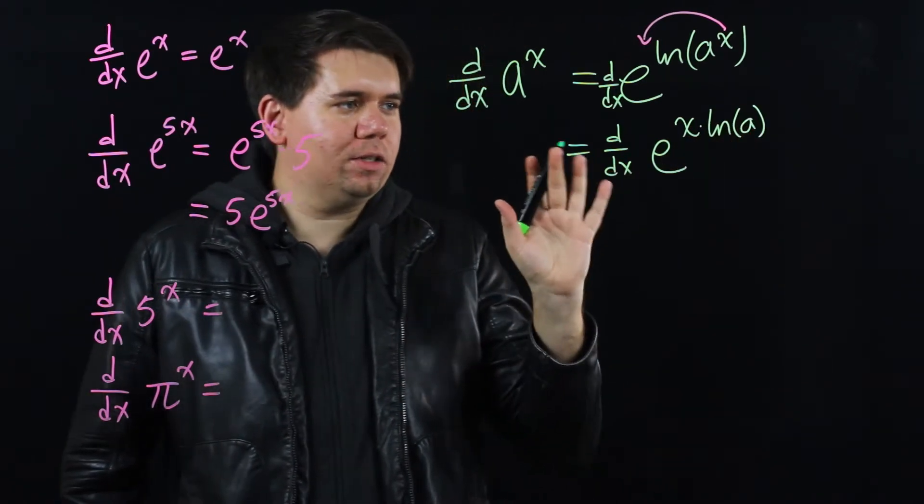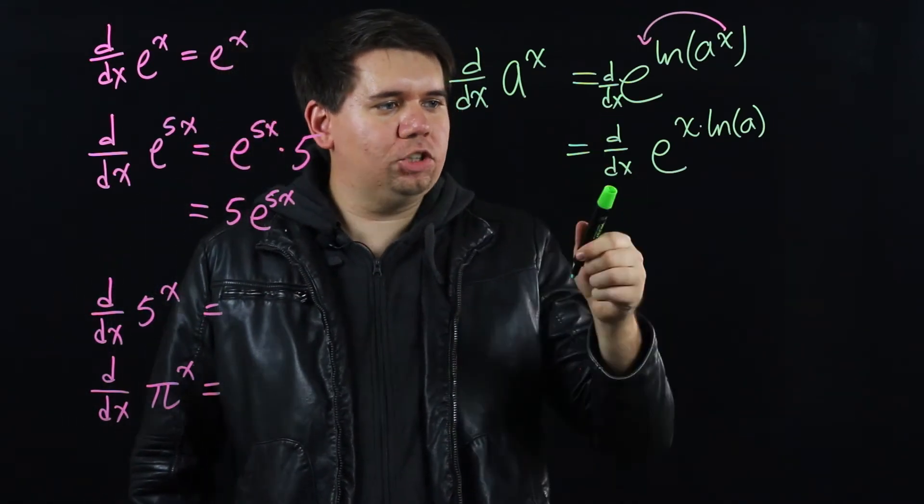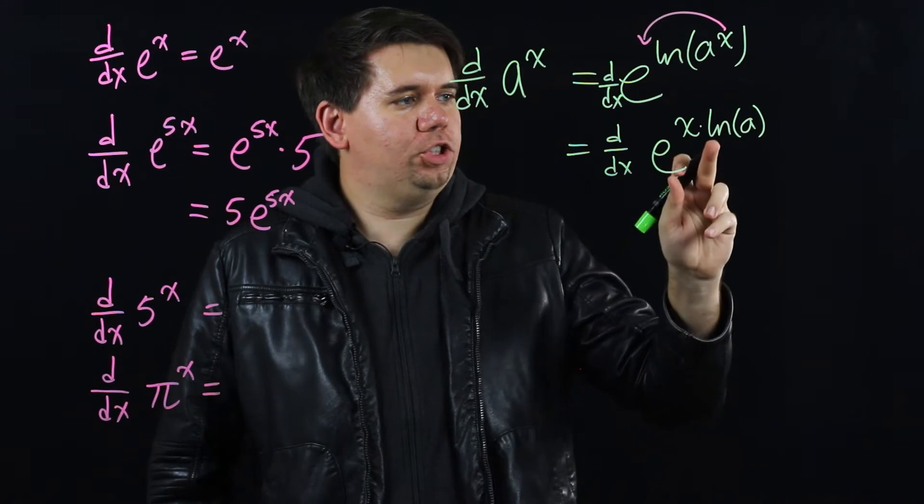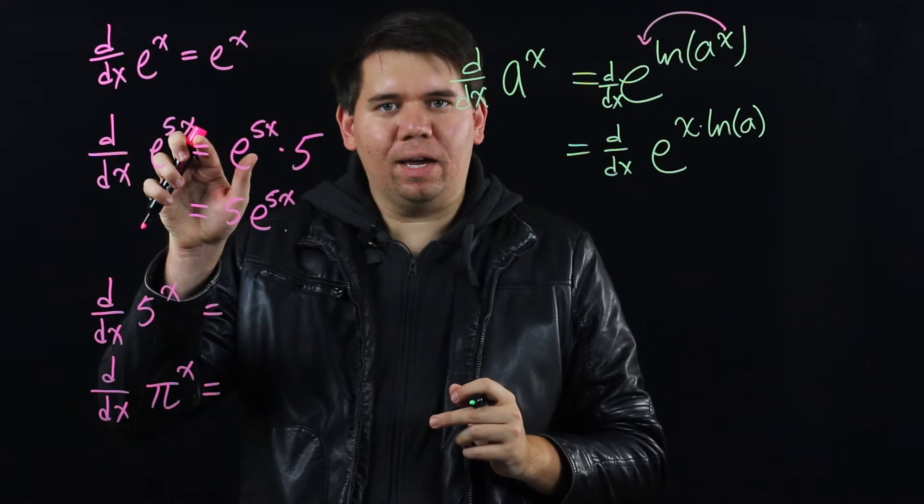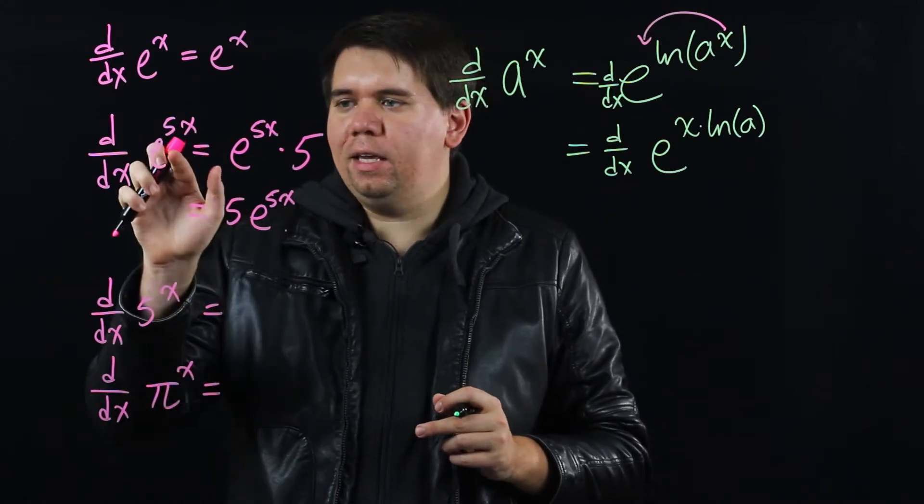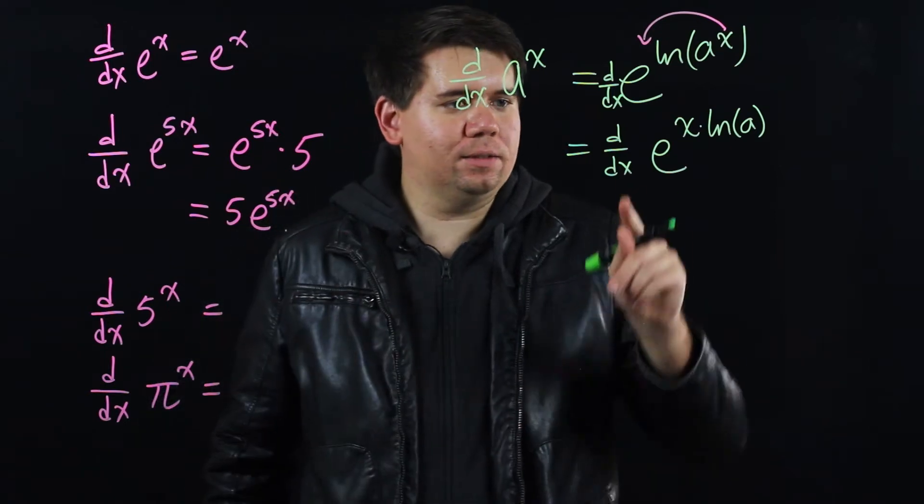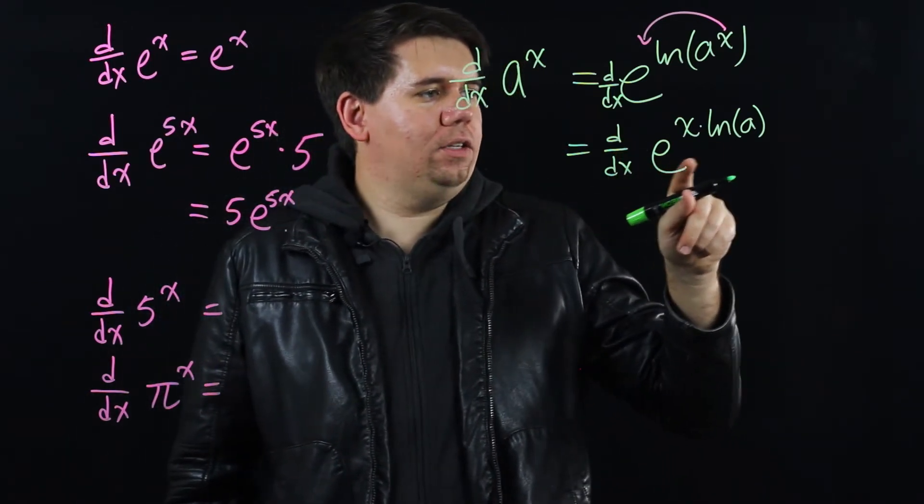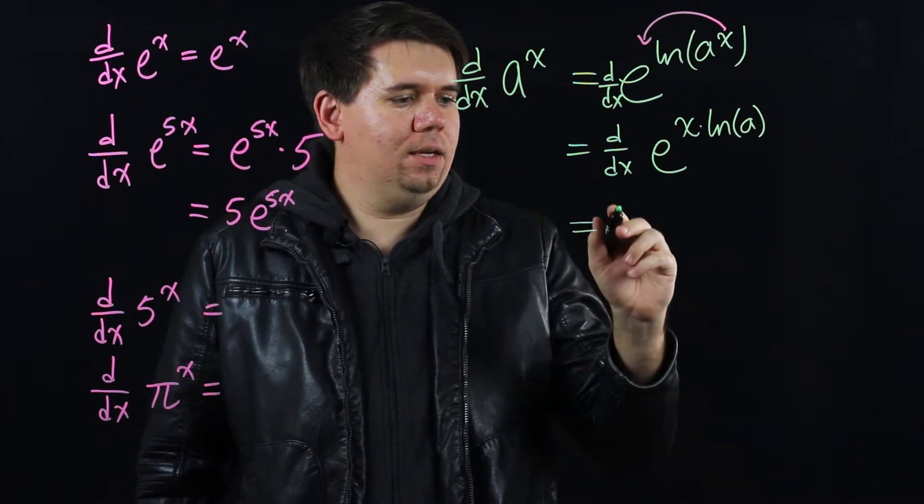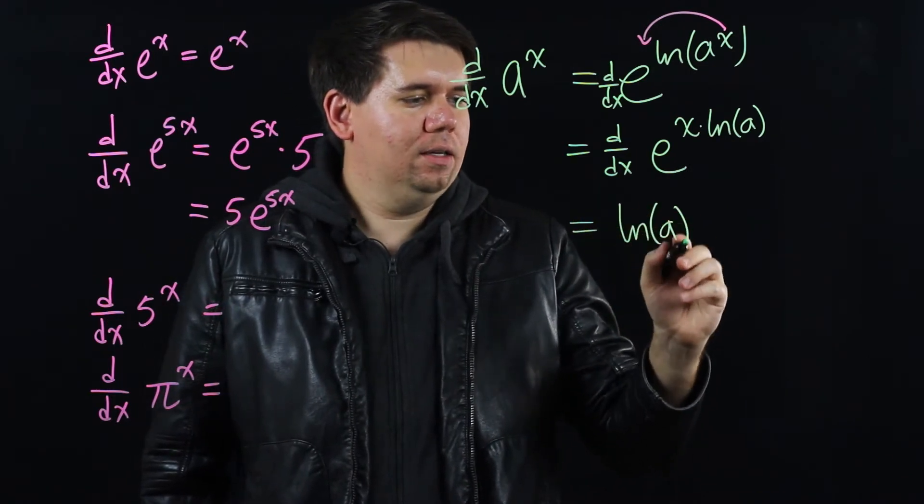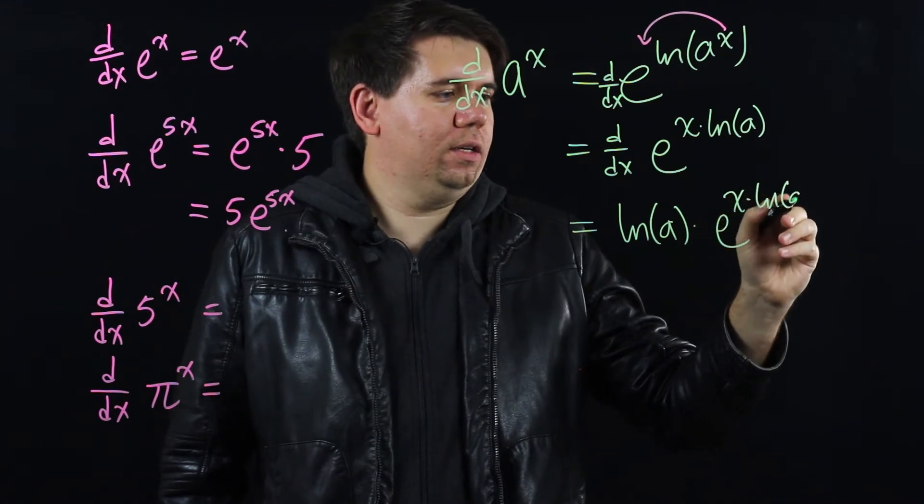Now I know this might look a little bit messy. But this is actually quite nice. Because now it's a derivative of e to just some multiple of x. Like in this example when we had e to the 5x. And just like how e to the 5x became 5 times e to the 5x. The derivative of e to the natural log of a times x will just come out to be the natural log of a times e to the x times natural log of a.